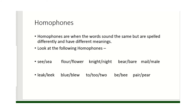Now, homophones. These are words that sound the same but are spelt differently and have different meanings. So we've got see with your eyes — double e — and sea, where you're swimming. They sound the same, they're spelt differently. One's double e, one's ea, and they certainly have different meanings. And we've got the flour that you bake with and the flower that you have in the garden.